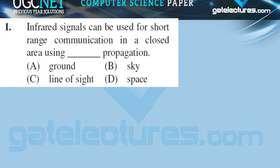Different propagation methods are given: ground, sky, line-of-sight, and space. These propagation methods depend on the frequency ranges of signals. In this question, infrared signals are given. Infrared signals are electromagnetic signals — they are invisible to the human eye. According to the frequency range, we have to decide which propagation is appropriate for the signal.